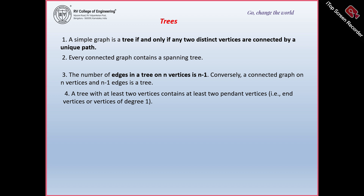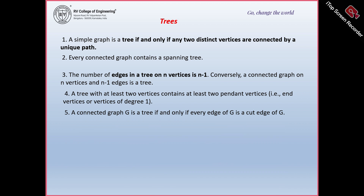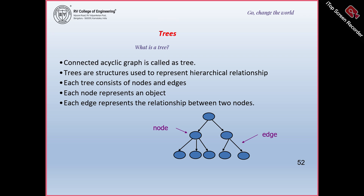A tree with at least two vertices contains at least two pendant vertices — end vertices, or vertices of degree 1, are called pendant vertices. A connected graph G is a tree if and only if every edge of G is a cut edge. A cut edge means that if you remove that edge, the graph becomes disconnected. So if you pick any edge from the tree and remove it, the graph becomes disconnected. That is why every edge of a tree is a cut edge.